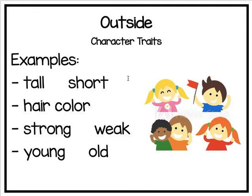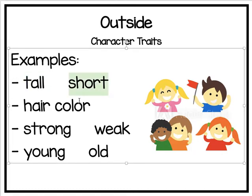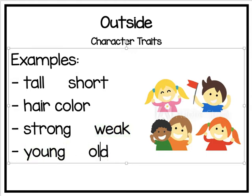So the outside character traits — here are some adjectives we can use to talk about characters. We could say they're tall or short. We could say they have brown hair, blonde hair, black hair, or white hair. We might say they're strong looking or weak looking, young or old. Those are all adjectives — describing words that are outside character traits.